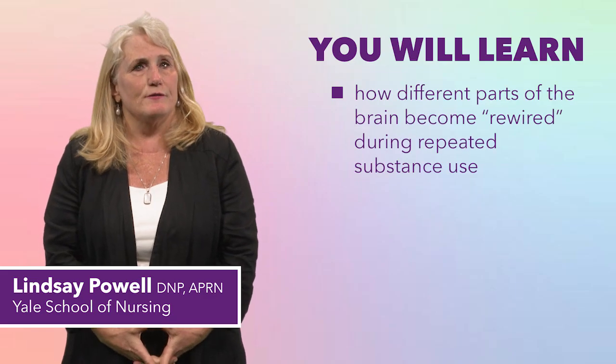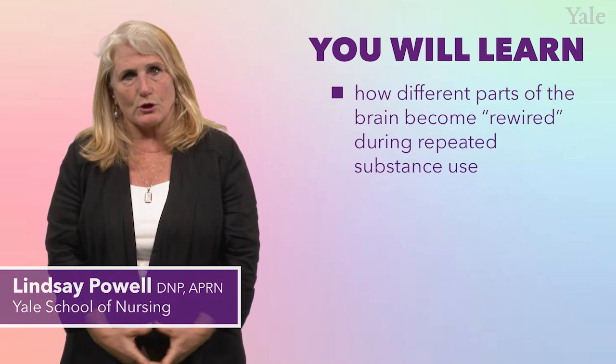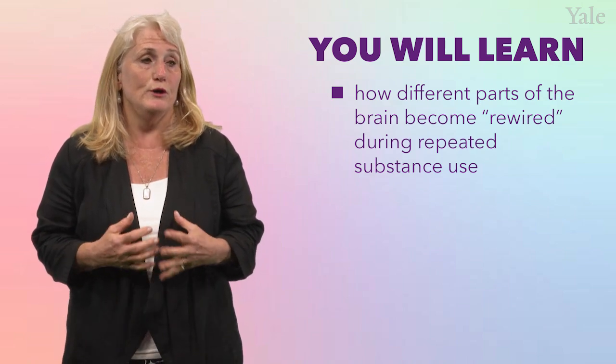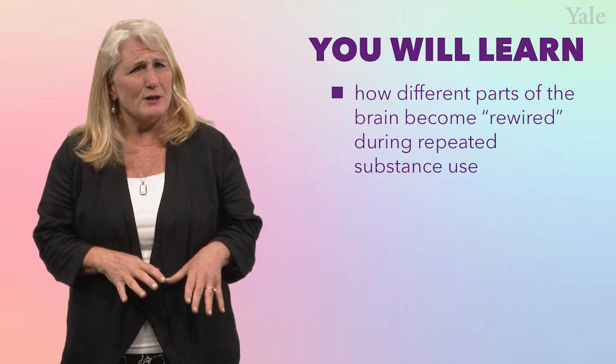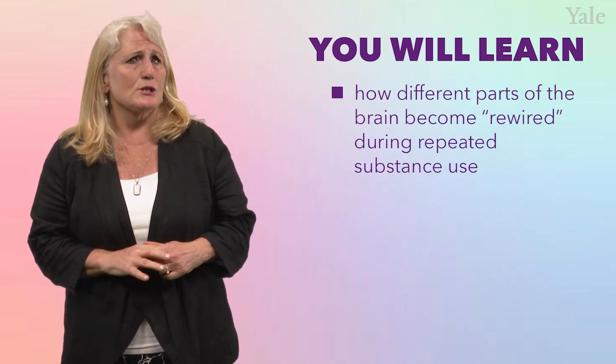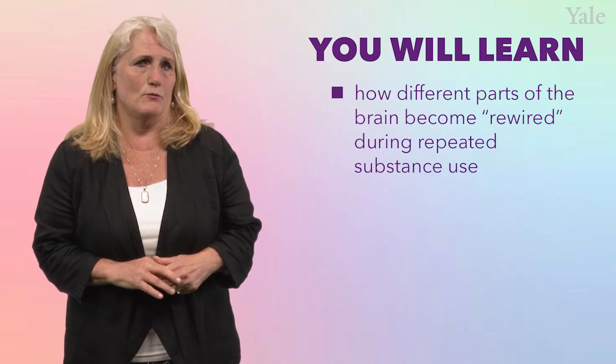In this lesson, you will learn how different parts of the brain responsible for self-regulation, reward, learning, and memory change and become rewired during repeated substance use. It's important to understand the neurobiological processes that lead to addiction, as they are the same ones involved in recovery. There is a lot of terminology in this lesson, and depending on your background, it may seem like a lot. In a nutshell, during addiction the reward system — the system that says 'go' — overpowers the prefrontal cortex, the part of the brain that says 'stop.'